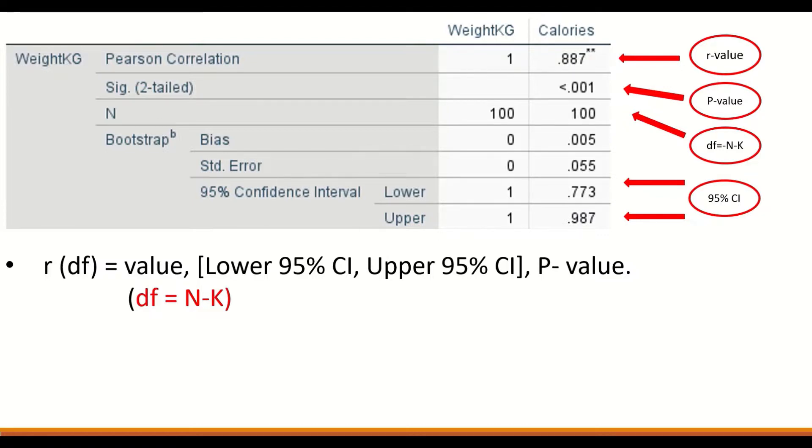Then after that, an equal sign, you put the value for R, which is 0.88, then the lower 95% confidence interval, which is 0.77, and the upper 95% confidence interval, which is 0.98, followed by a comma, and then P-value less than 0.001.